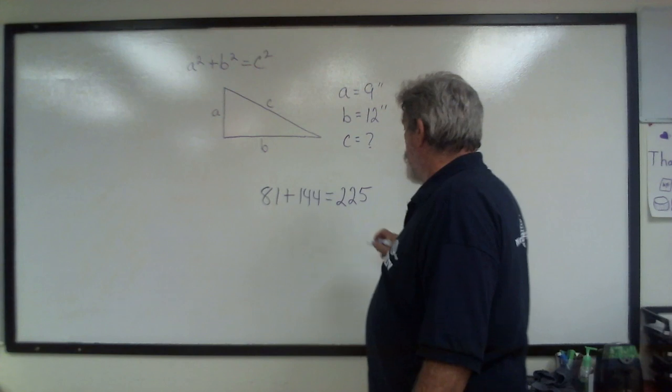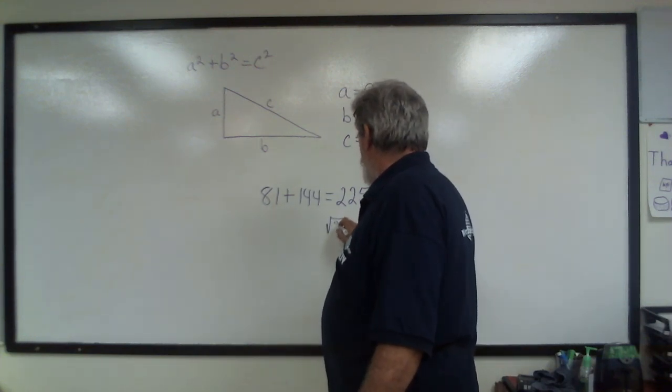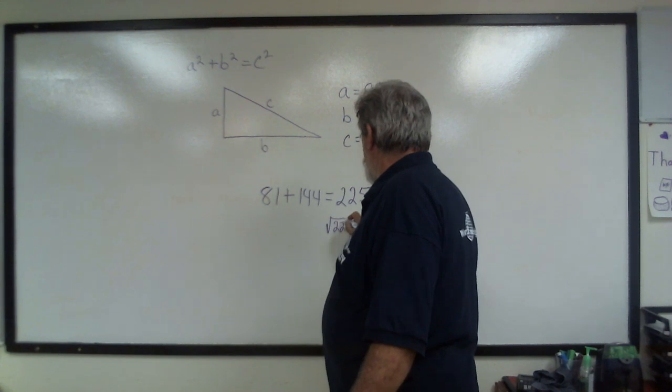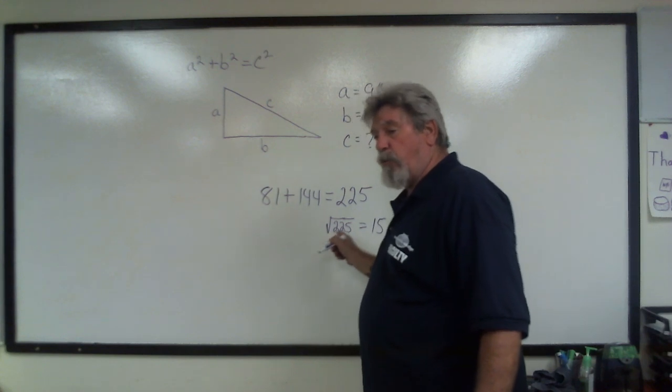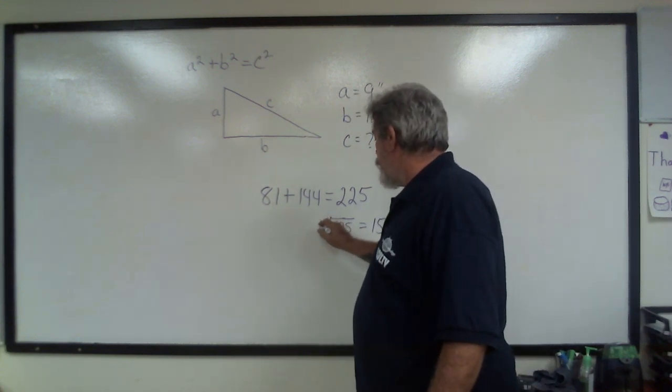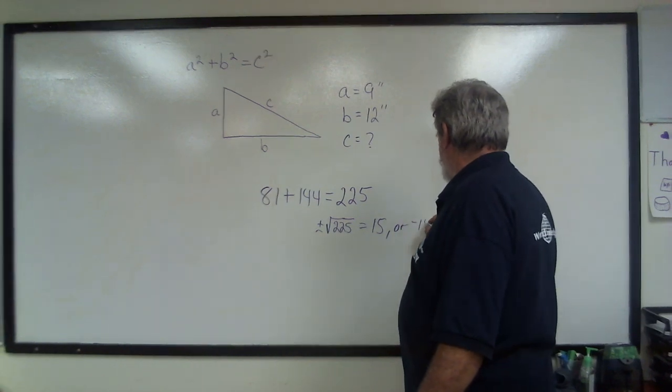So we're going to take the square root of 225, and that equals 15. But since it's square root, it could be plus or minus, so it could be positive or negative 15.